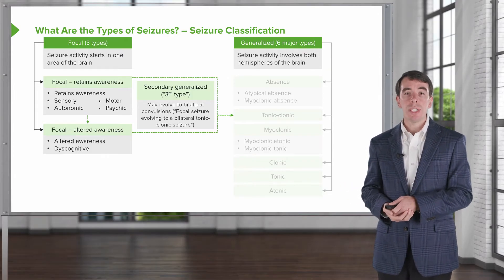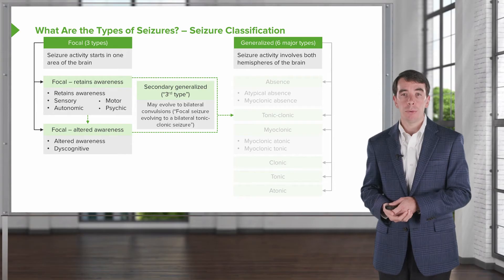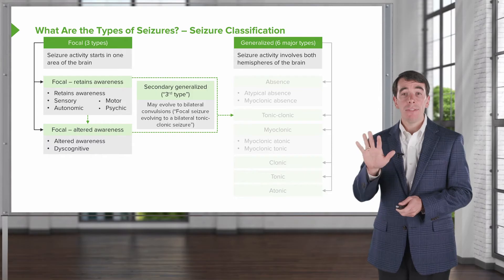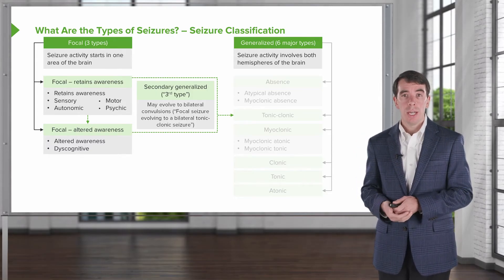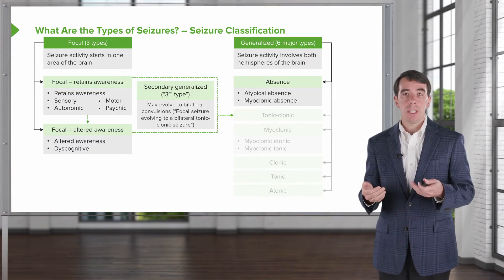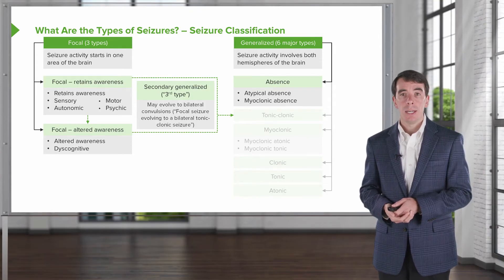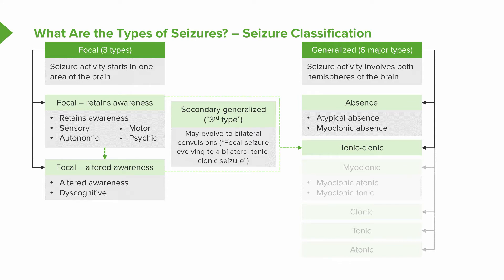Generalized seizures are different — these involve seizure activity affecting both hemispheres of the brain equally and symmetrically. There are five or six types of generalized seizures. Absence seizures are brief episodes with loss of awareness or behavioral arrest. Tonic-clonic seizures begin with tonic-clonic motor activity. Myoclonic seizures are very brief single jerks — myoclonic jerks are not always epileptic in origin, as we can all experience a myoclonic jerk when falling asleep, but myoclonic seizures have an epileptic origin. Clonic seizures involve jerking, tonic seizures involve retained stiffening, and atonic seizures round out the six types of generalized seizures.